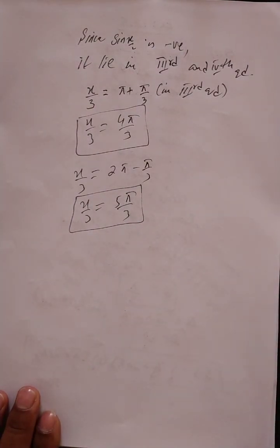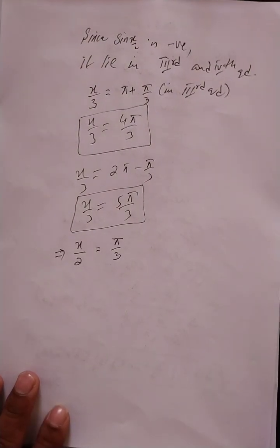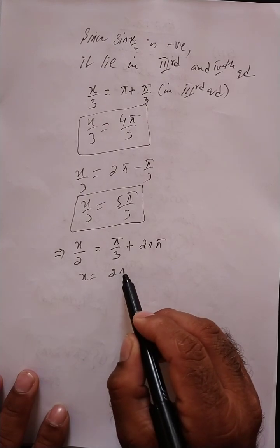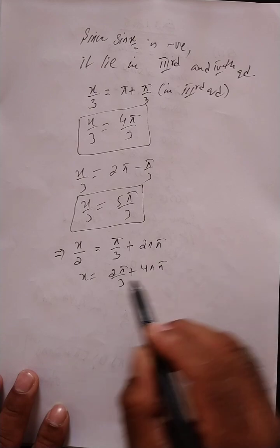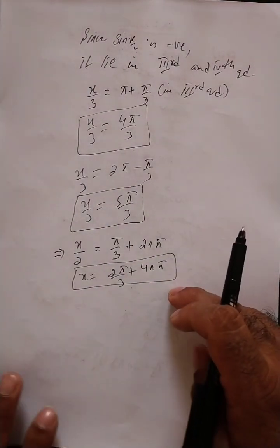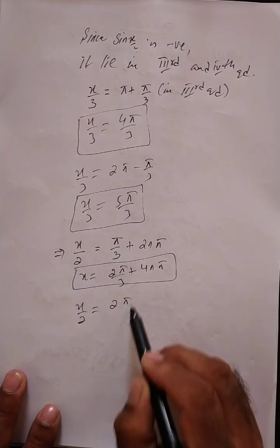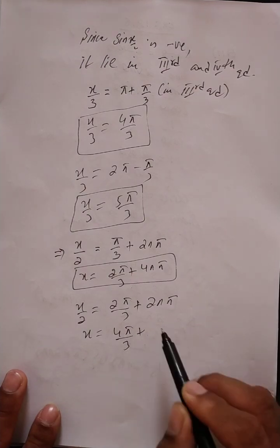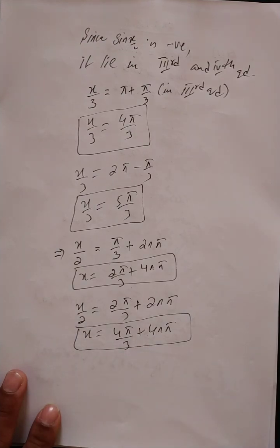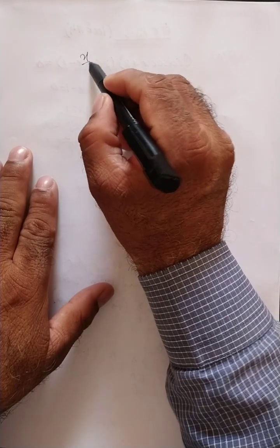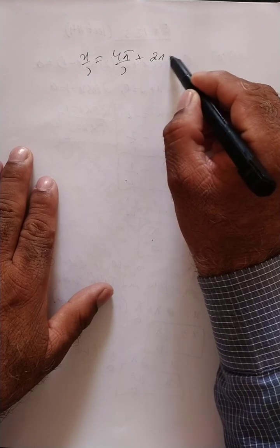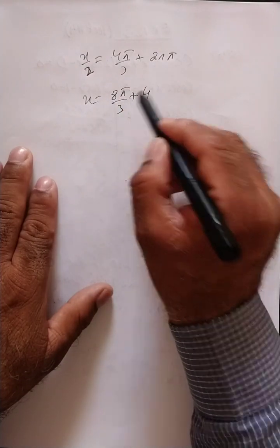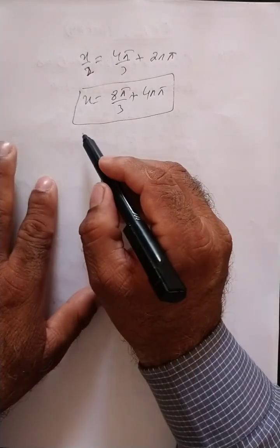Now for each result, we add the period 2nπ and then multiply by 2 to get x. First: x/2 = pi/3 + 2nπ gives x = 2pi/3 + 4nπ. Second: x/2 = 2pi/3 + 2nπ gives x = 4pi/3 + 4nπ. Third: x/2 = 4pi/3 + 2nπ gives x = 8pi/3 + 4nπ.